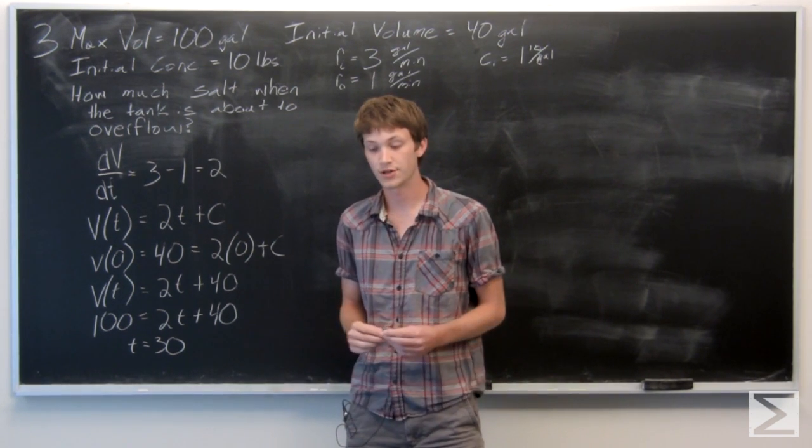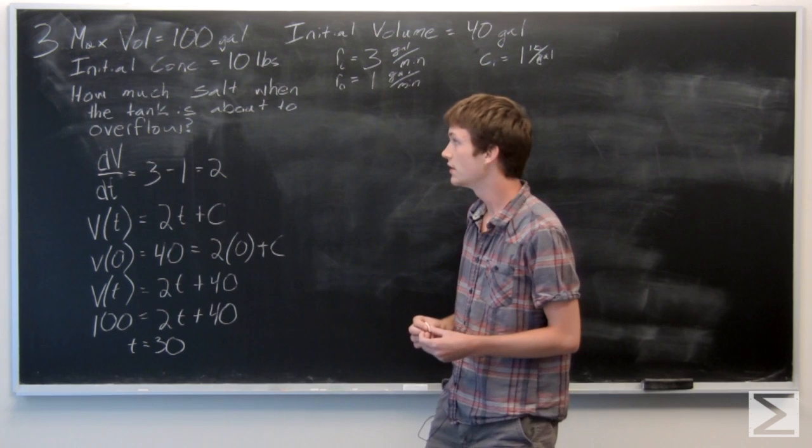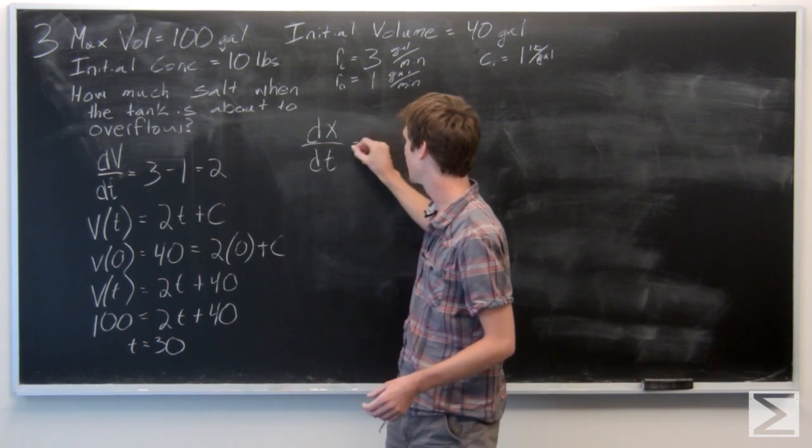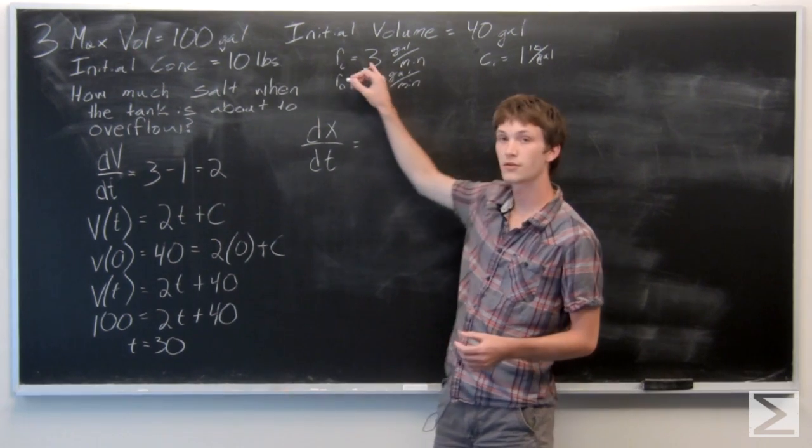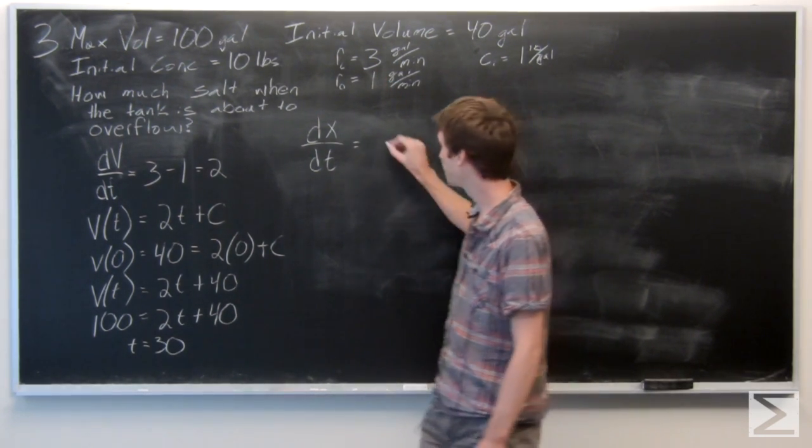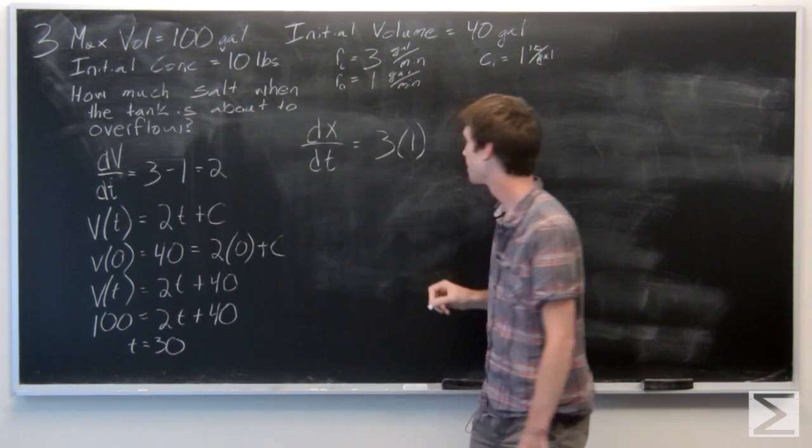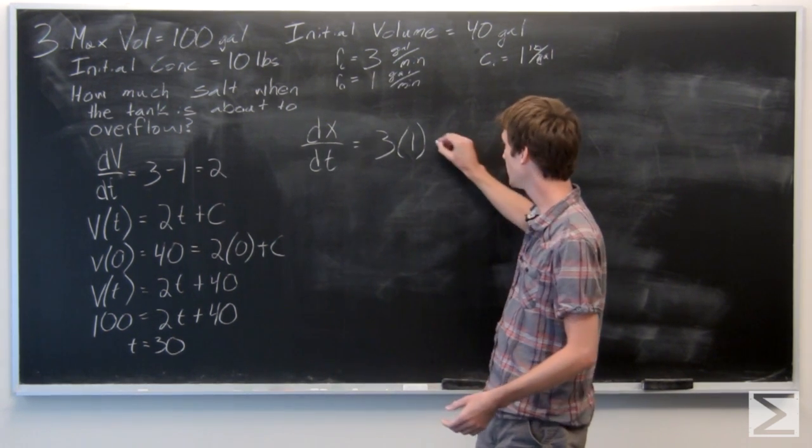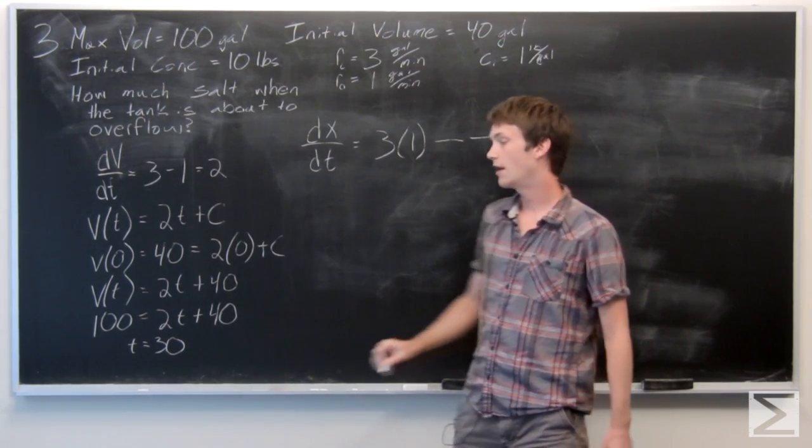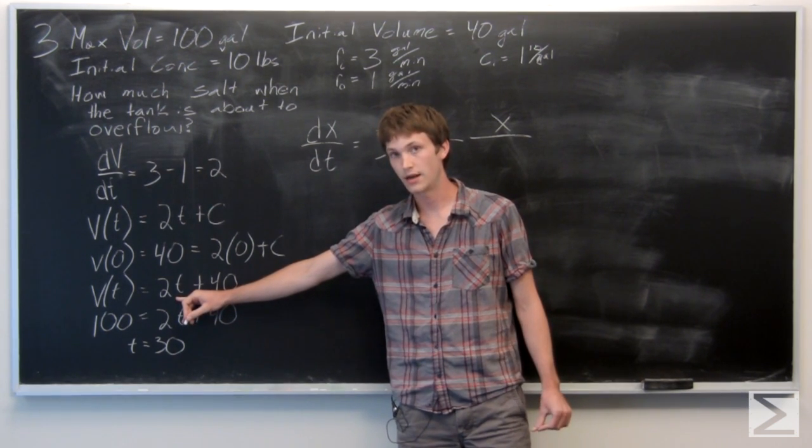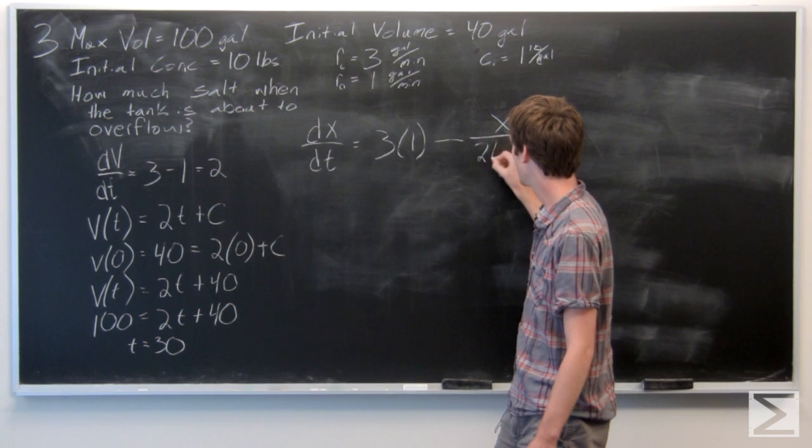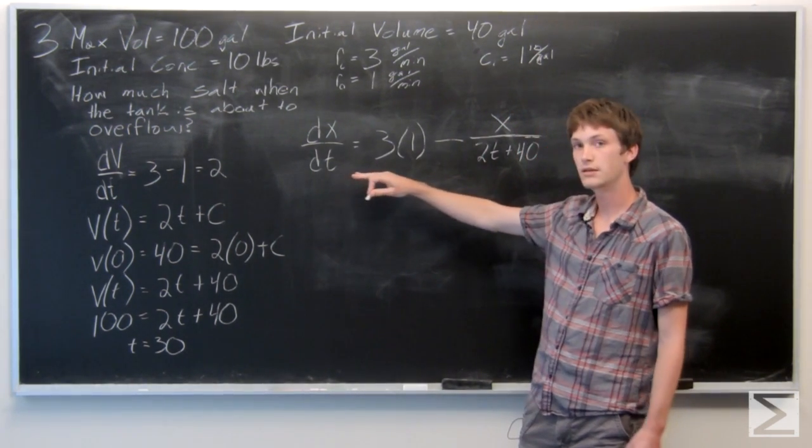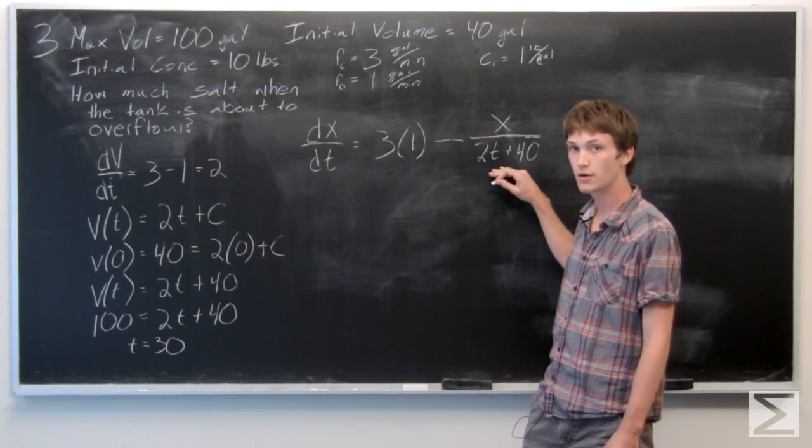Now, we want to express the concentration in terms of how much salt we're going to have as a change dx dt. So we know the incoming amount is 3 gallons per minute times 1 pound per gallon. And we don't know exactly how much is going out in concentration because it's all mixing together. So we're going to subtract x per the gallon at any given time. And we get the following differential equation dx dt equals 3 minus x over 2t plus 40.